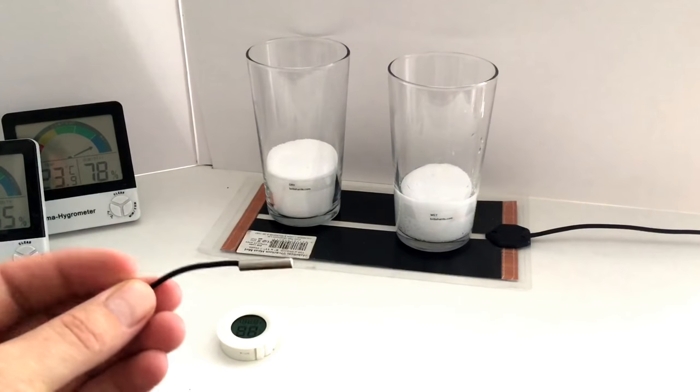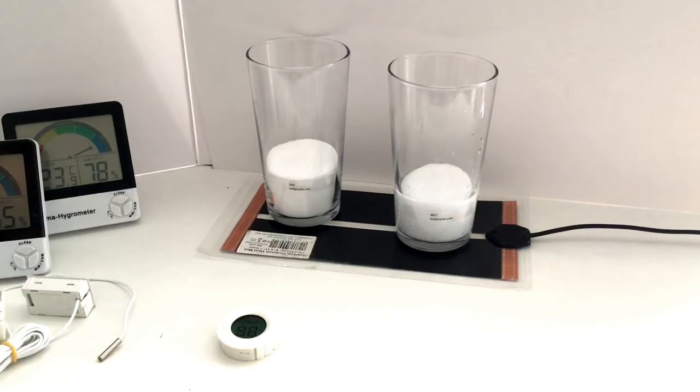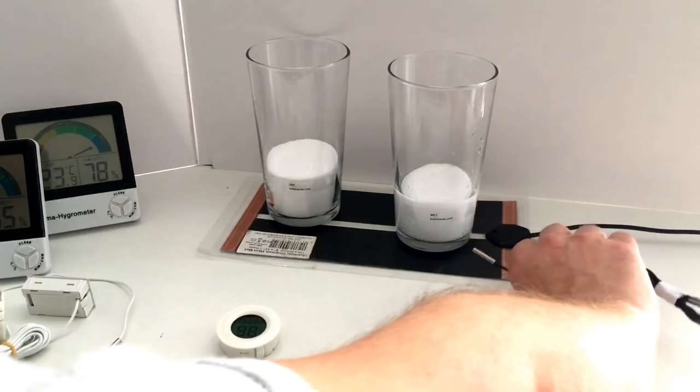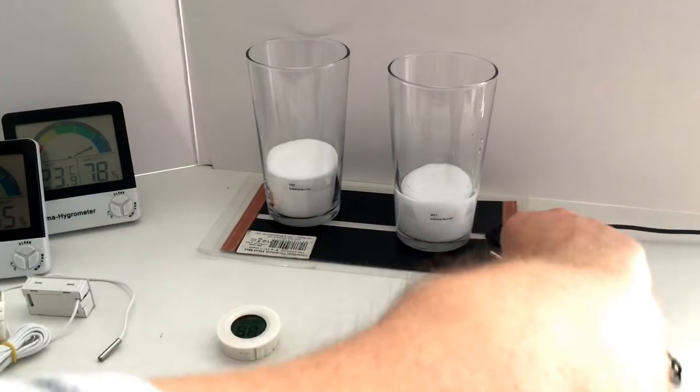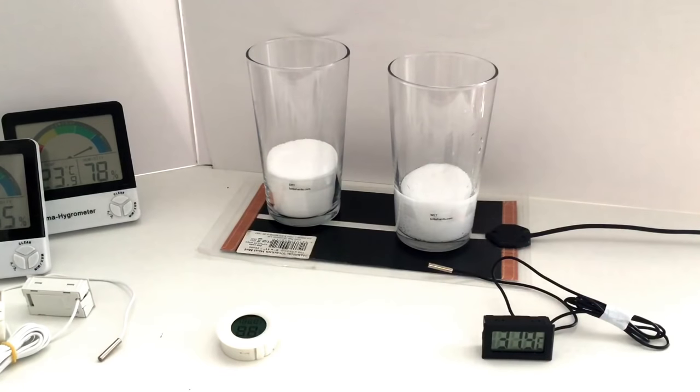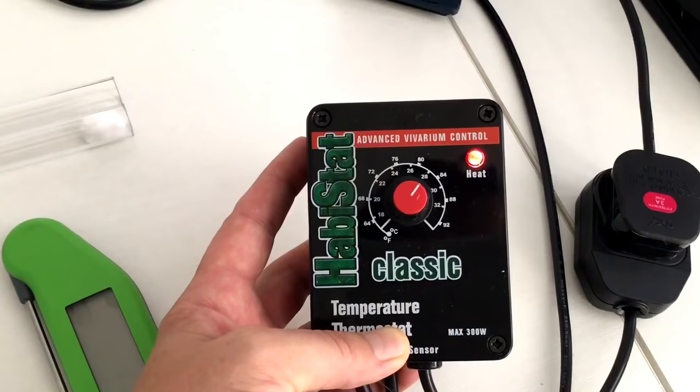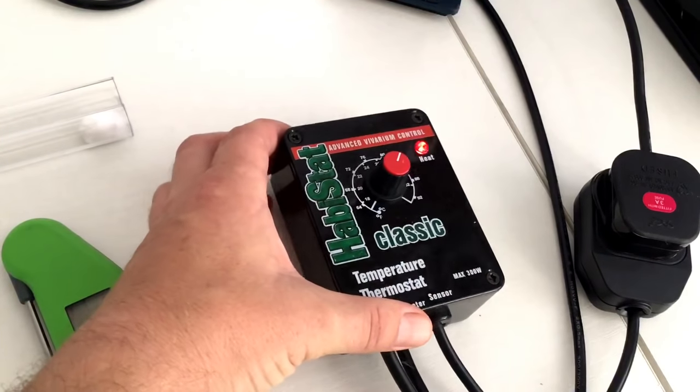So obviously this heat mat hasn't got any thermostat on it. So that shows you the kind of heats you're applying. Just stick a formicarium on top of that you're easily reaching 40. That's a six leg twitching 40 celsius.